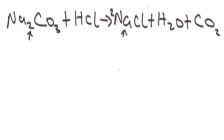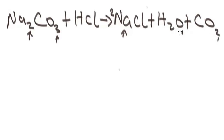To balance sodium, we have to put two here. So now sodium is balanced. Let's check carbon. How many atoms of carbon at the left? We have one. At the right, we also have one. So carbon is balanced. Let's check oxygen. At the left, we have three atoms of oxygen. At the right, we also have three atoms of oxygen — this two plus one here, that's three. So oxygen is balanced.